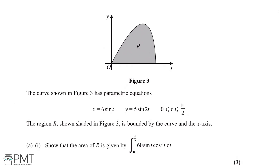The integral we need to show is from limits 0 to π/2: the integral of 60 multiplied by sin(t) multiplied by cos²(t), integrating with respect to t.